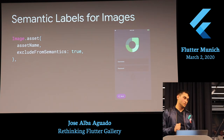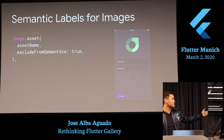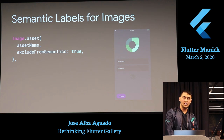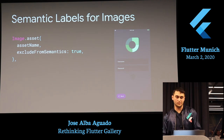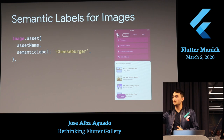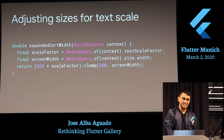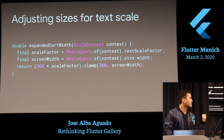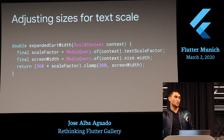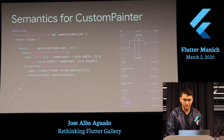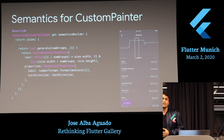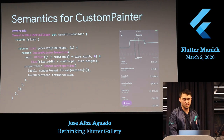Here's how we did semantics: by default, images include semantics. If you don't want an image to announce itself, you can exclude the semantics by setting that to true. If you have an image and need it to say something specific, then use a semantics label — so when semantics is on, it goes to that image and tells you it's a cheeseburger. We also adjusted size for text scaling so you can make it bigger or smaller in the settings. We used custom painter semantics too to add specific semantics to certain widgets.